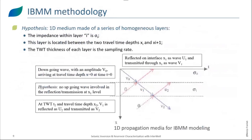Let me detail the IBMM methodology used first in the well-to-seismic calibration and then during the inversion process. As a simplification, let's detail the hypothesis for a 1D medium. We suppose that this medium is made of a series of homogeneous layers, each with an impedance sigma_i. In our schematic, we have sigma_0 and sigma_1. Each layer is located between two travel-time depths, x_i and x_{i+1}, and the thickness in time of each layer equals the sampling rate of the seismic.